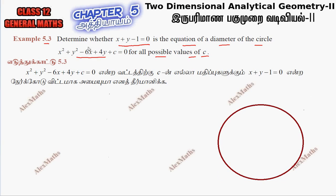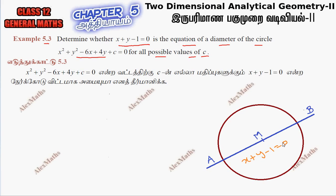So in the circle equation, x squared plus y squared minus 6x plus 4y plus c equal to 0.